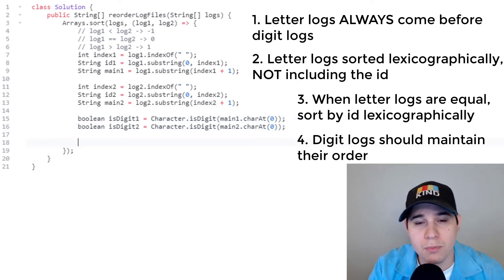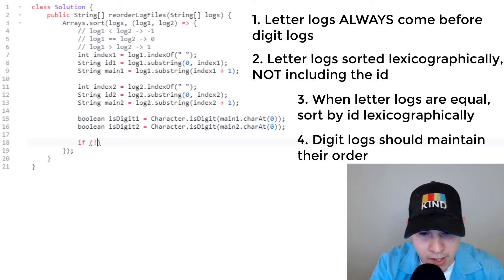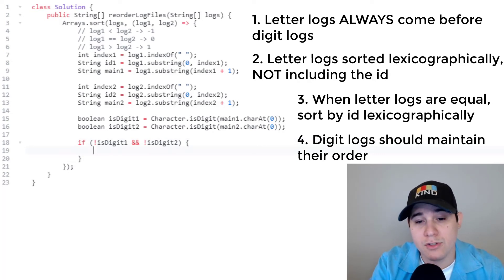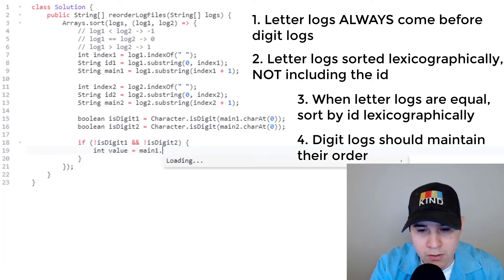So now we just need to complete the logic for the rule. So the first case is if both of them are letter logs. So we're going to come down here, we're going to say if not is digit one, and not is digit two, then we need to compare by the main strings. So we'll say int value is equal to main one compared to main two.